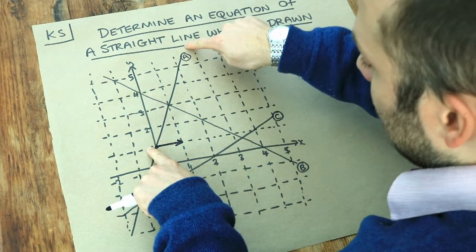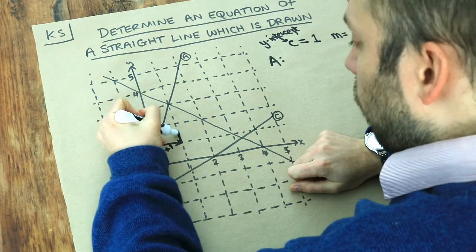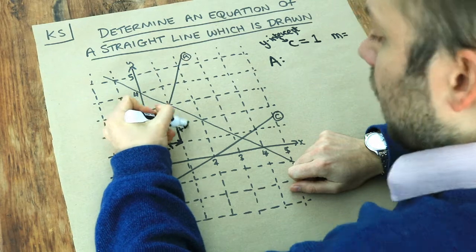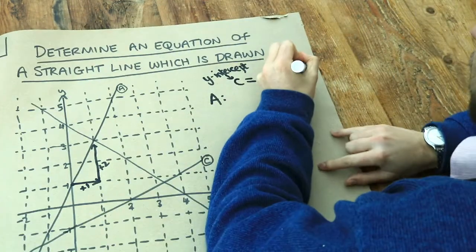So we can see on this line here, each time x increases by one we can see the y value goes up by two. For each one square we go right, we go two up, and therefore the gradient is two.